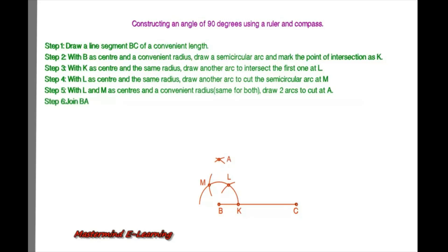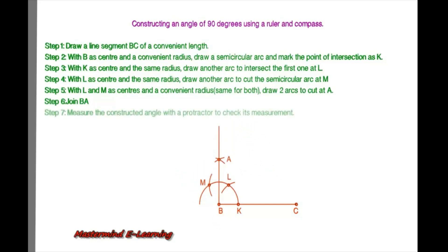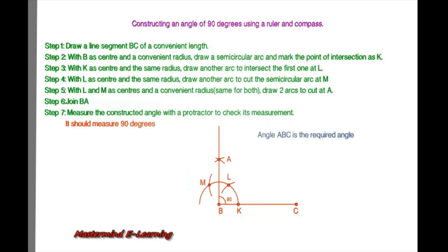Join BA. Our angle is ready. Measure the constructed angle with a protractor to check its measurement — it should measure 90 degrees. Angle ABC is the required angle.